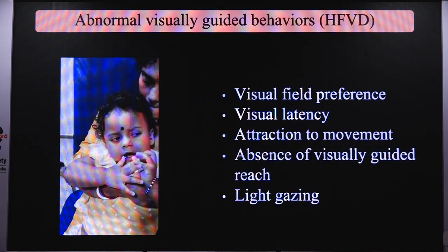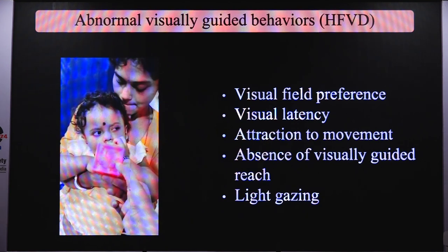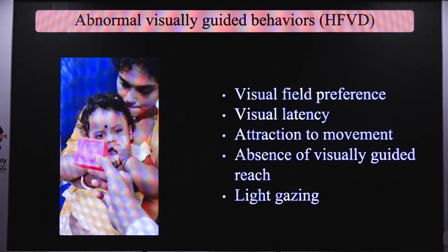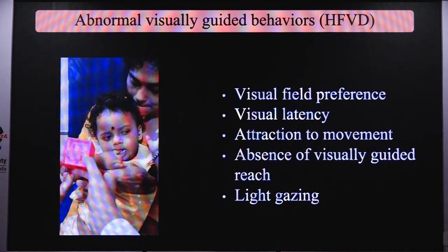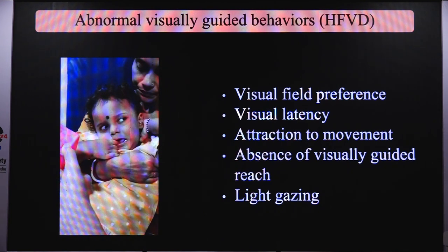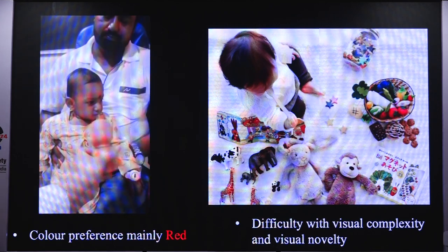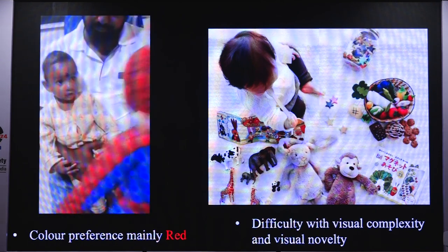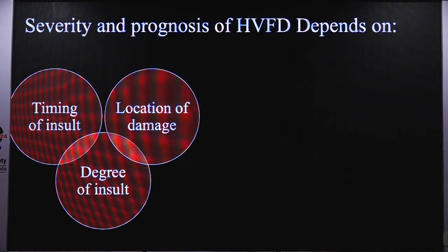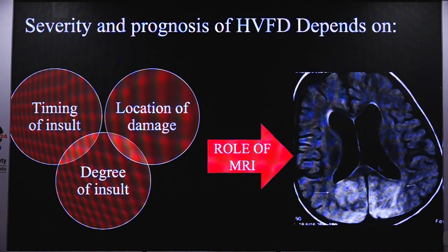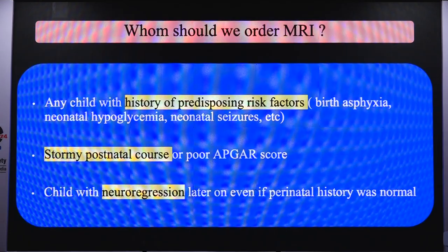Higher visual function deficit depends on the timing of insult, location of damage, and degree of insult — all three of which can be beautifully studied in MRI. Whom should we order MRI for? Any child with a history of predisposing risk factors, a child who has had a stormy postnatal course with a poor Apgar score, or a normal child with a normal perinatal history but showing neurodevelopmental regression. These are the candidates for MRI.